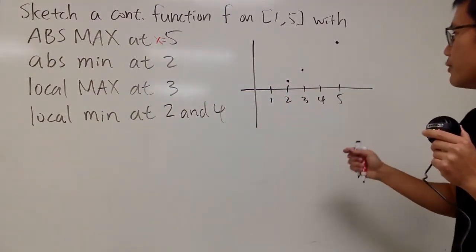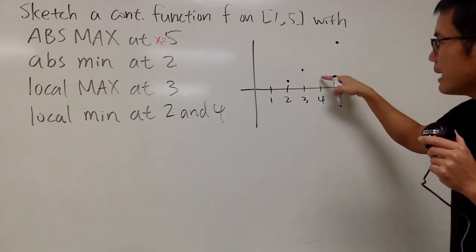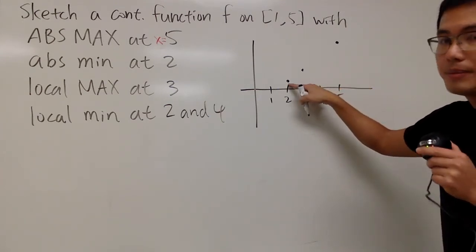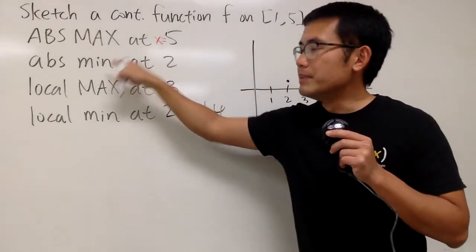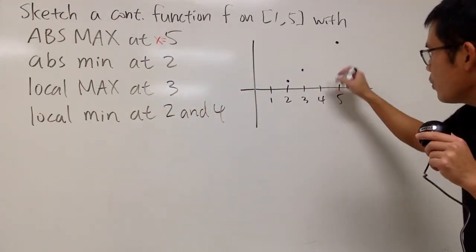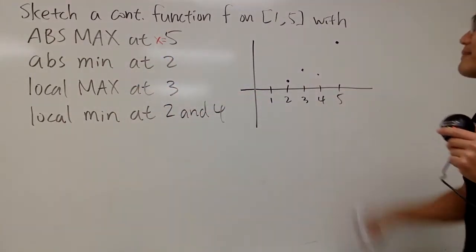And at 4, you also have to be a local minimum, but it cannot be lower than this. Because at 2, this is the absolute minimum. So when x is 4, maybe I'll just put it down like this, like that. Okay?